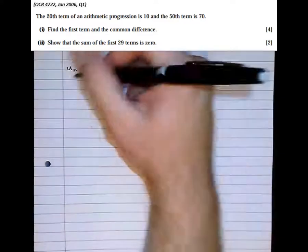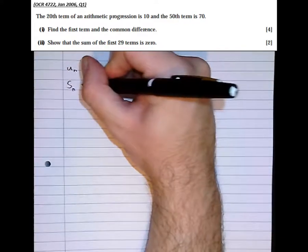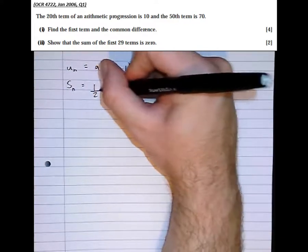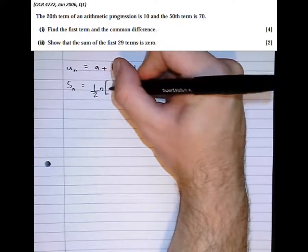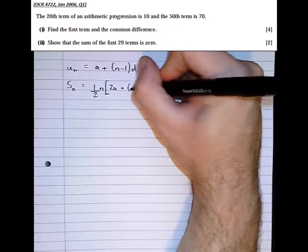And that the sum of n terms is a half n times 2a plus (n minus 1)d.